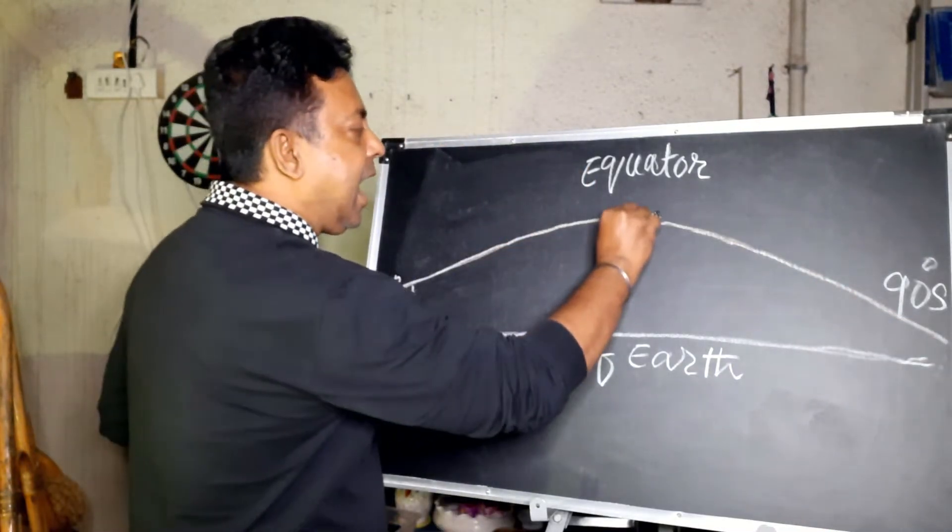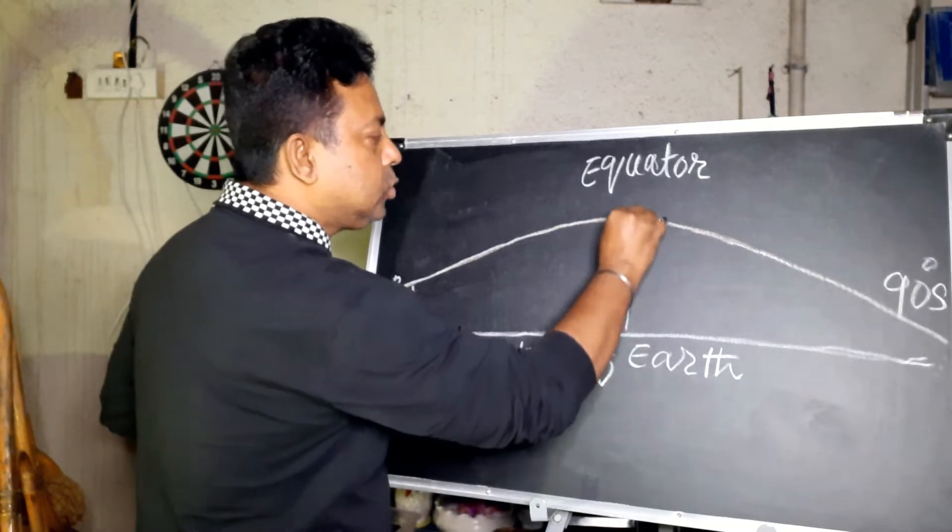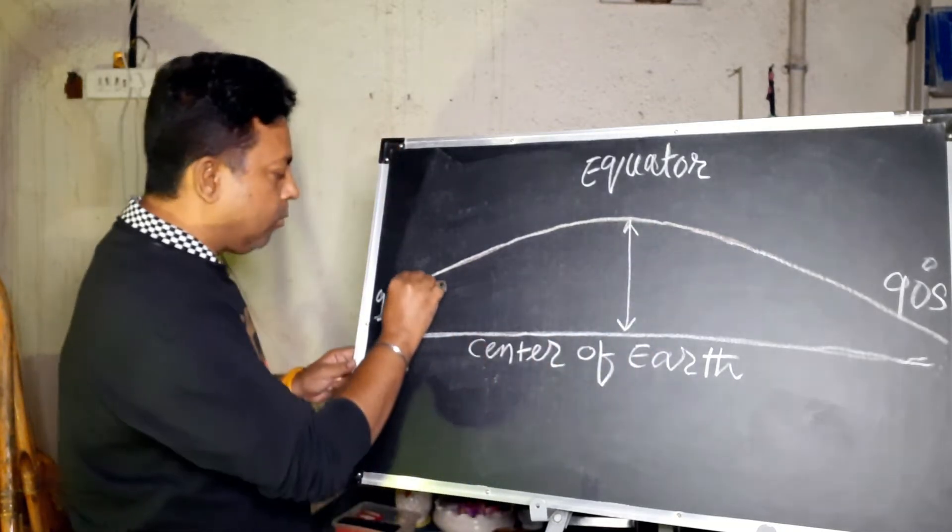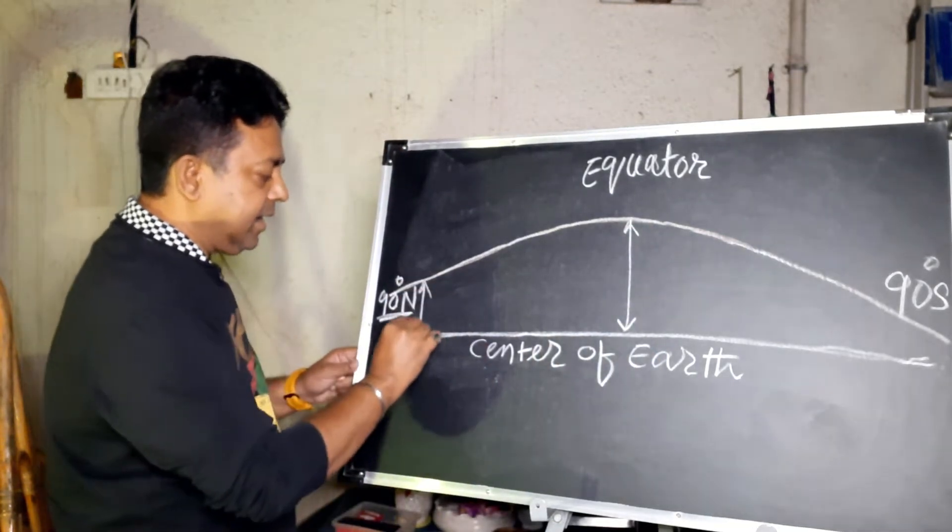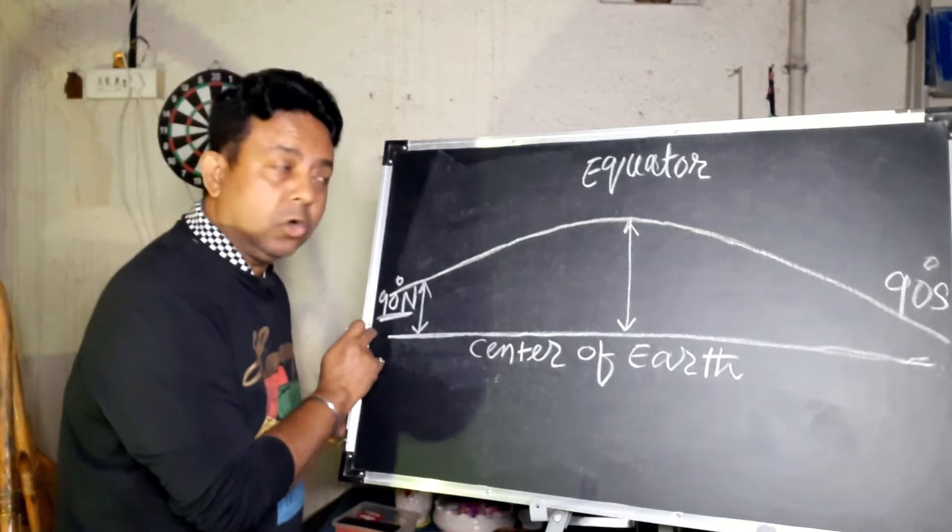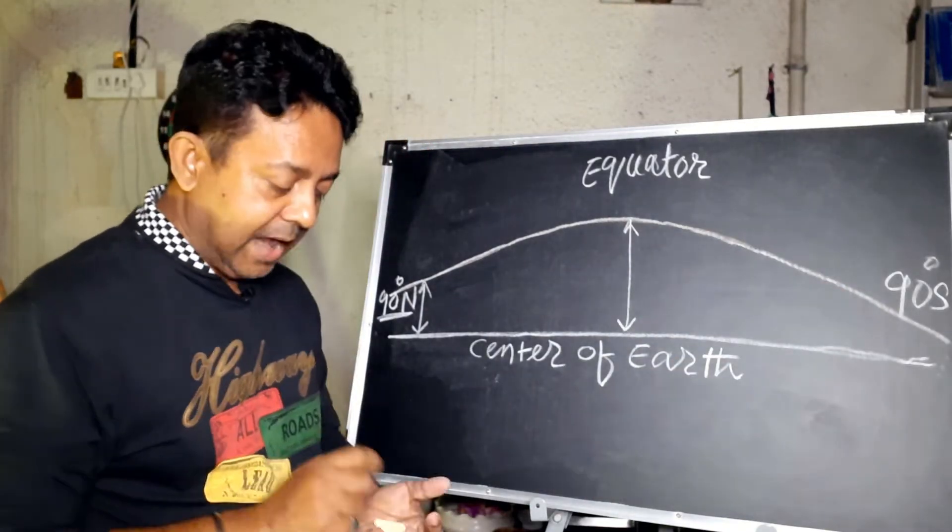So you see at the equator, it is 21 kilometers more than at either the North Pole or at the South Pole, remember that.